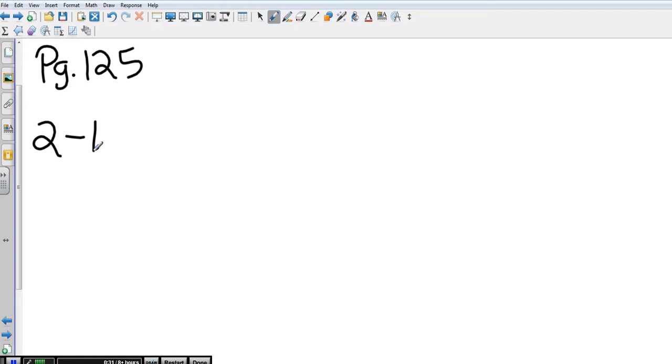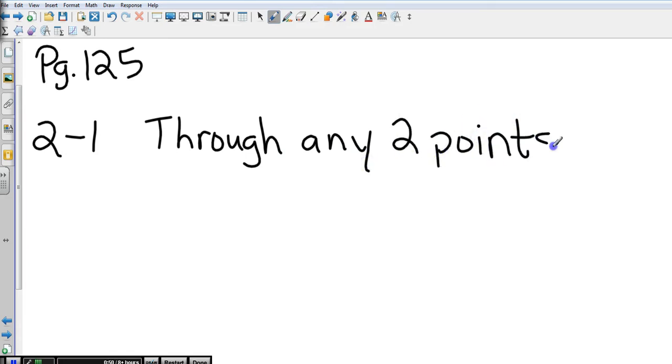Postulate 2-1 says - let me read it exactly - through any two points there is exactly one line.